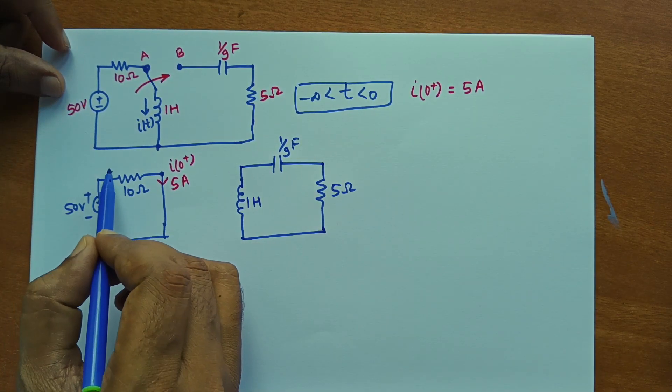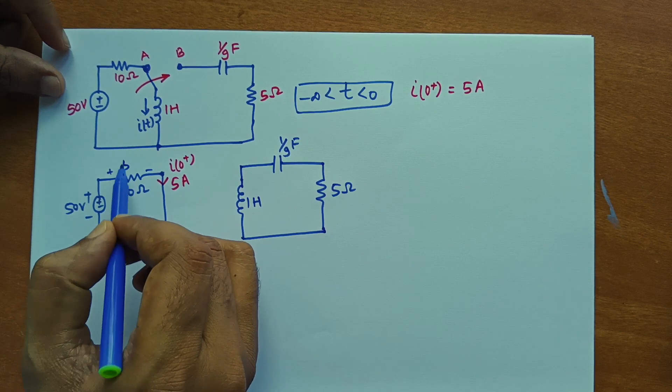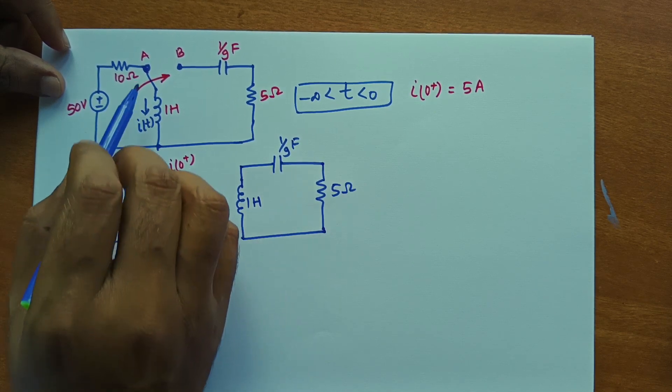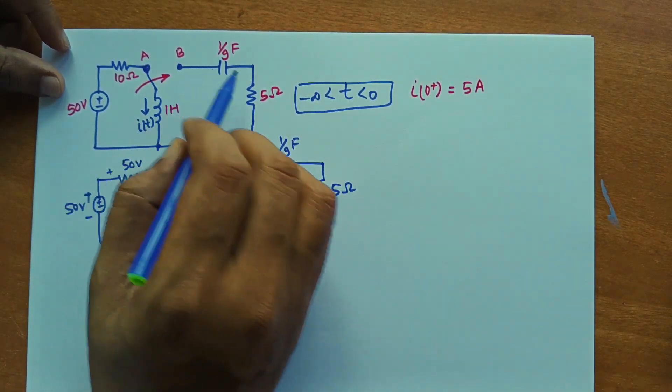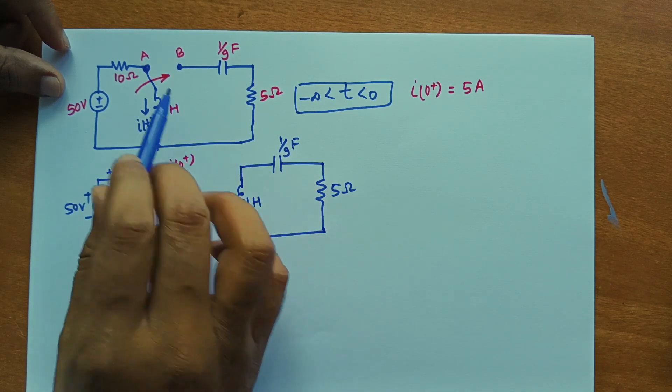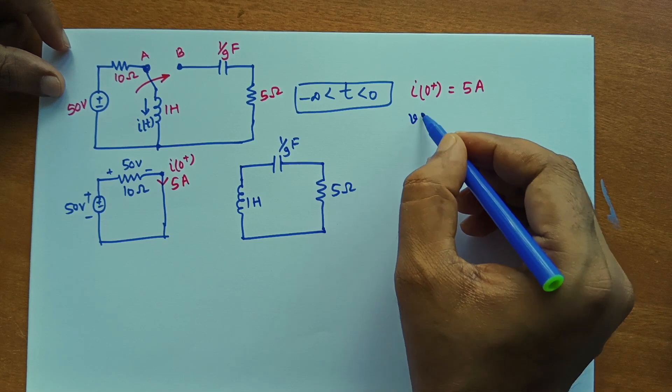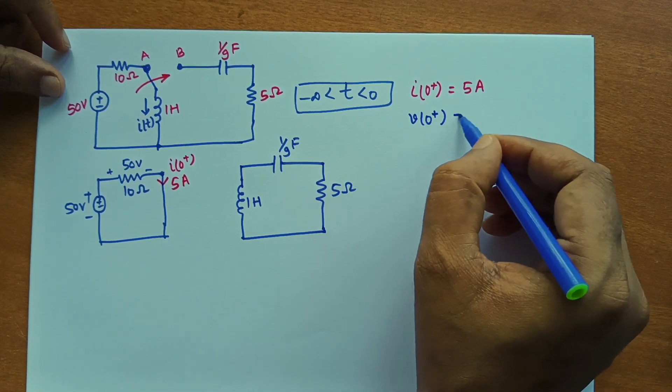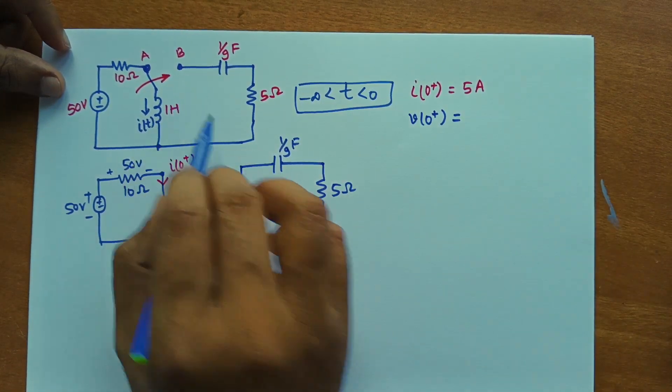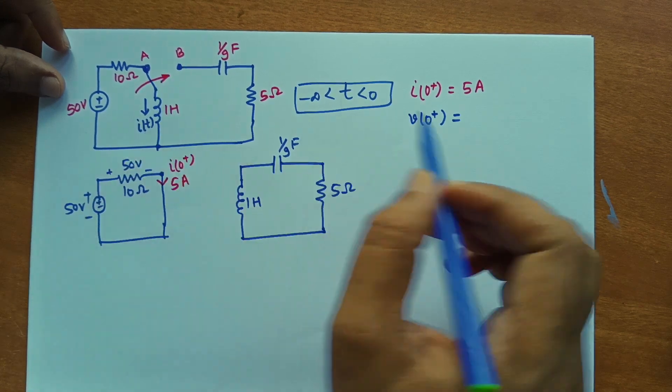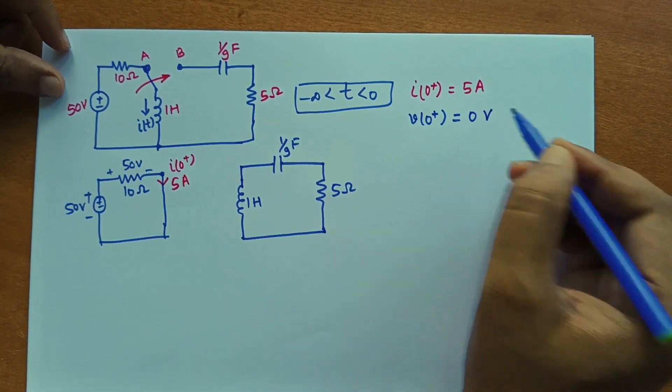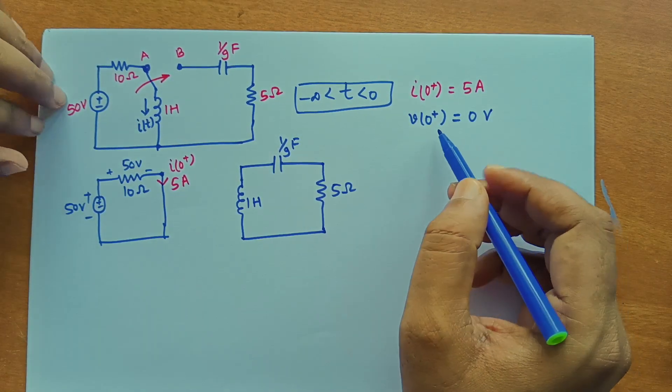So entire voltage was dropped across 10 ohm resistance only. So this 50 volt was dropped across this before switch was on. So there is no voltage drop across this branch initially. That is why the initial voltage across capacitor can be written as 0 volt. As there is no drop across this capacitor.